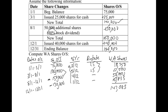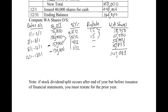One quick note: if a stock dividend or split occurs after the end of the year but before the issuance of the financial statements, you would restate for the prior year. For example, if the 50% dividend happened on January 10th, all rows would carry a 1.5 restate factor. You would just restate for the whole year.